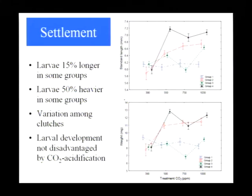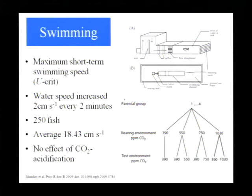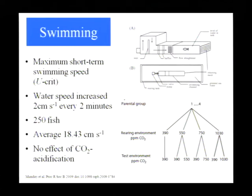We wanted to go beyond just size and weight and look at some performance measures. We put little larvae in a swim chamber with a current coming through, increasing the flow steadily to find the maximum speed they can swim against. We've done this for 250 fish reared at each of the different CO2 levels. We found that neither the rearing level nor the test level of CO2 had any effect on swimming ability — their aerobic performance is good, and CO2 doesn't seem to be affecting them.